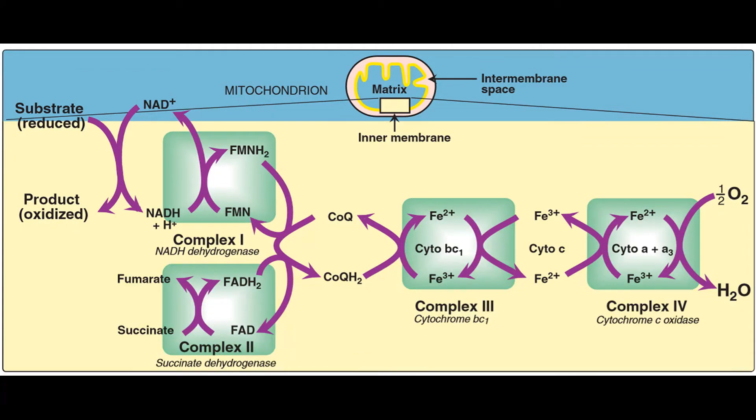This is the electron transfer chain. The inner mitochondrial membrane can be disrupted into five separate protein complexes, called complexes one to four, and there is a fifth one. Complexes one to four each contain part of the electron transfer chain. Each complex accepts or donates electrons to relatively mobile electron carriers such as coenzyme Q and cytochrome c. Each carrier in the electron transfer chain can receive electrons from an electron donor and can subsequently donate electrons to the next carrier in the chain.